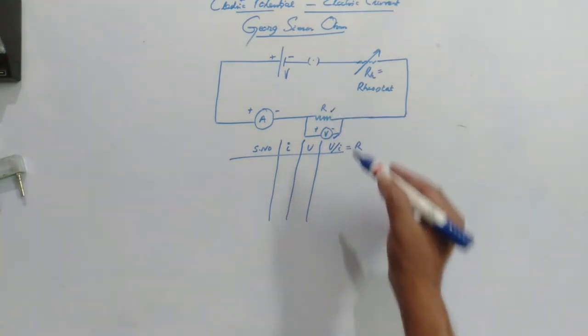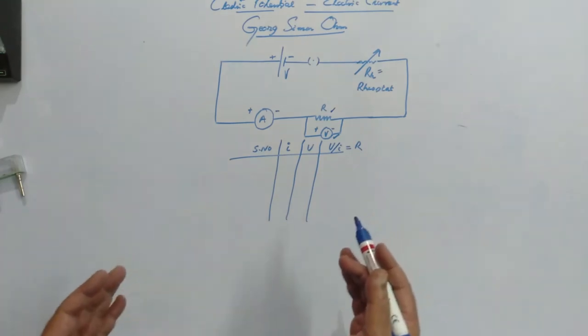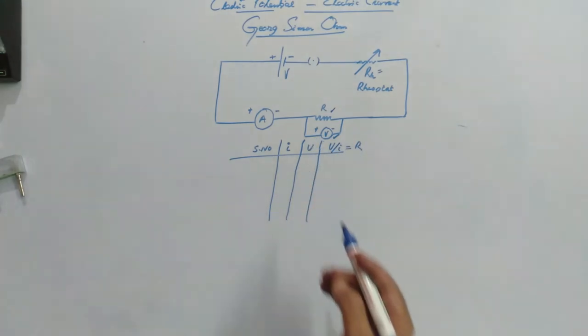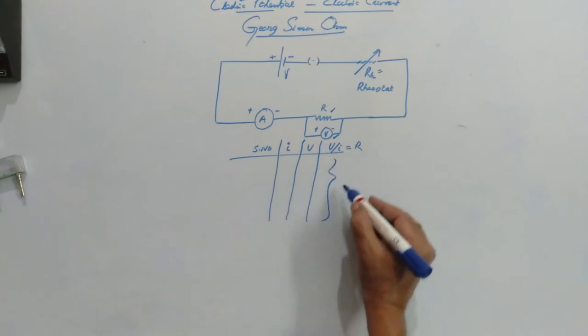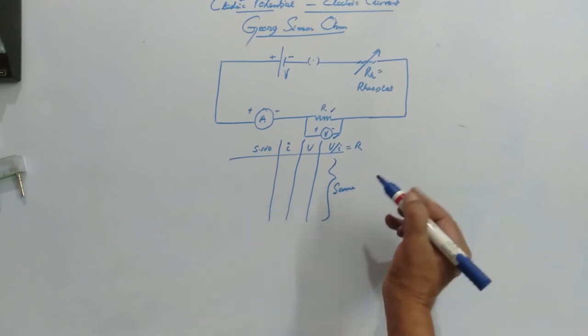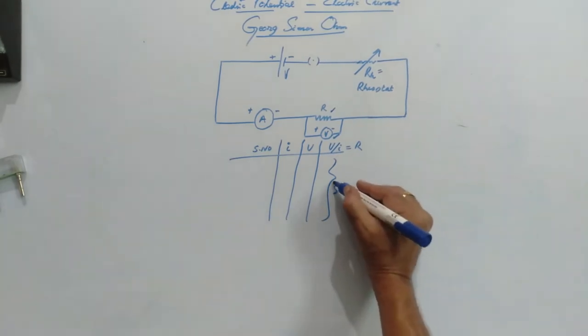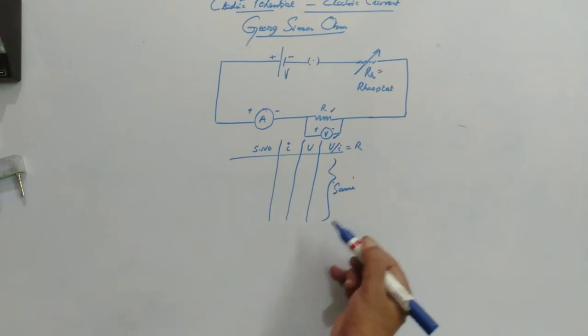We are taking only one wire and we are taking different values of voltage and current. In all the cases, you have to get the same or more or less same, because sometimes experimental limitations may cause variation from one reading to the other.